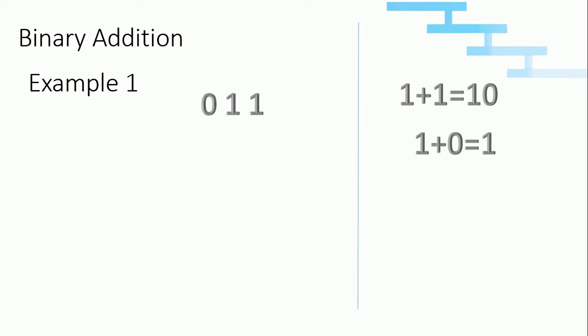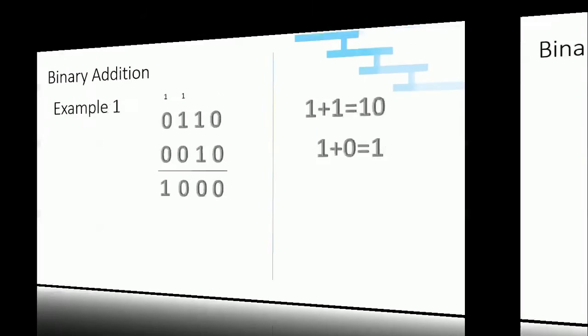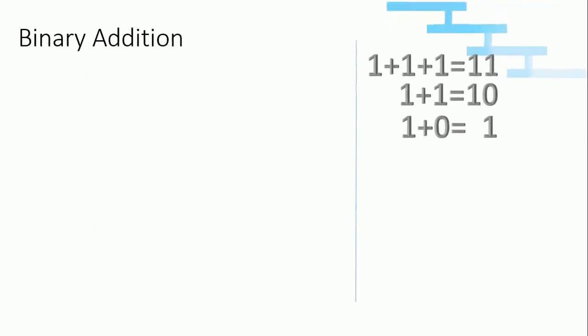Now we will do binary addition on a four-bit value with this rule. Zero and zero: when we add zero and zero we get the output zero. When we add one and one we get the output one zero, so one is the carry. One and one gives us one zero; one is the carry. One zero zero gives us one. This is binary addition.